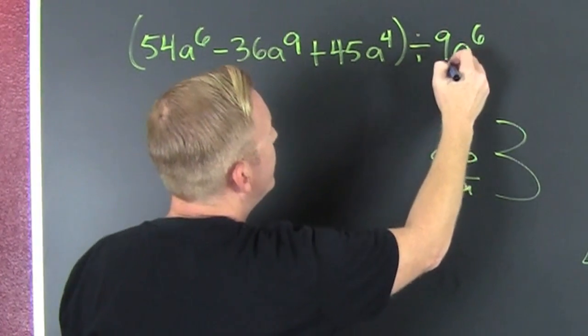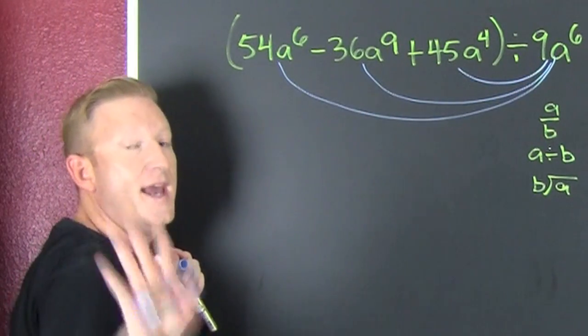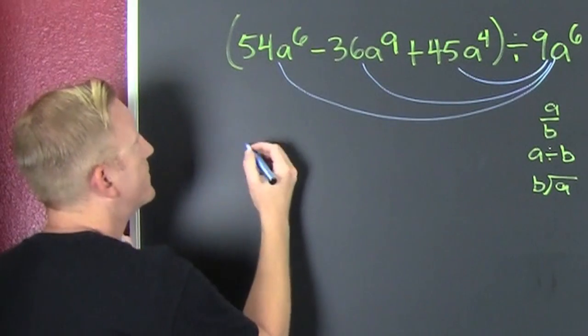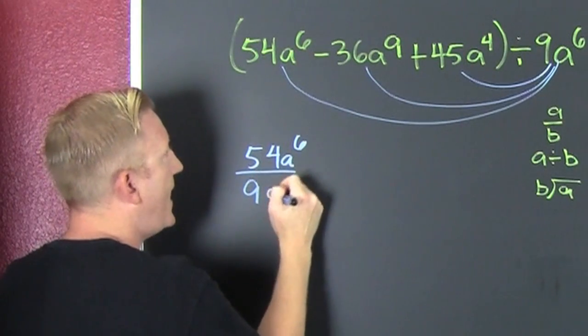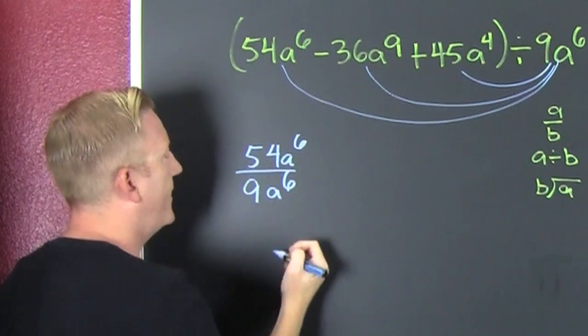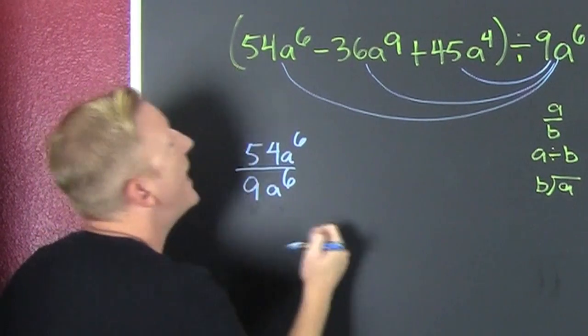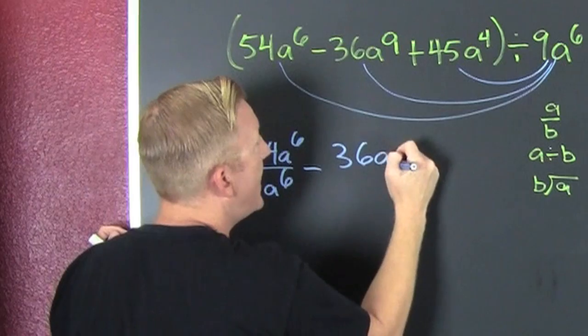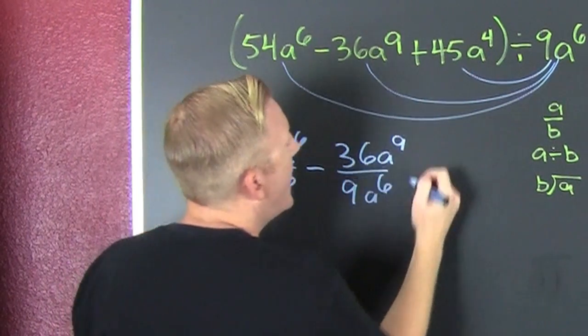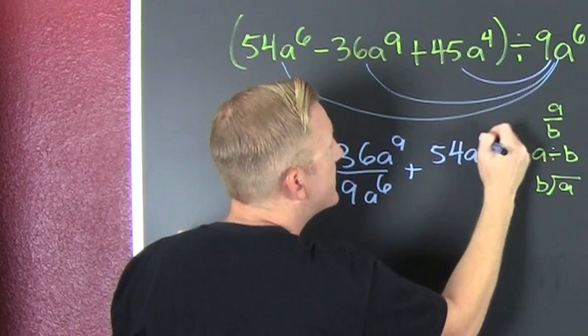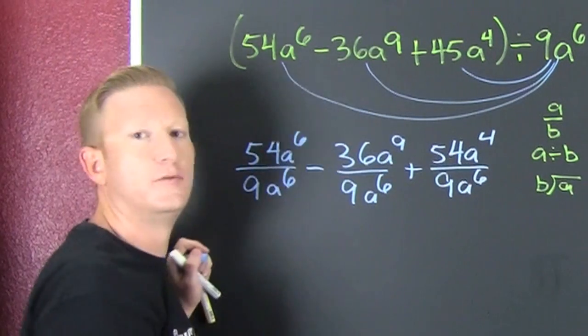The distribution of division under addition. And write it in 3 terms. That's 54a to the 6th over 9a to the 6th. Nines and As. Nines are just As with long hair. And then right here I have 36a to the 9th divided by 9a to the 6th. And then plus 54a to the 4th divided by 9a to the 6th. Oh boy.